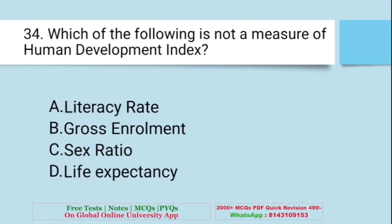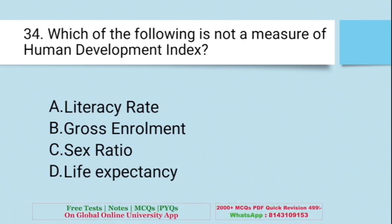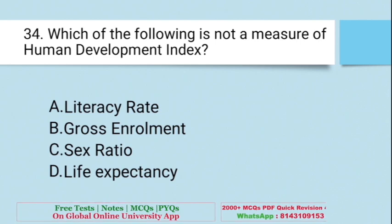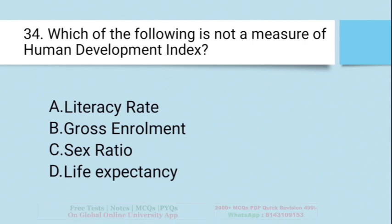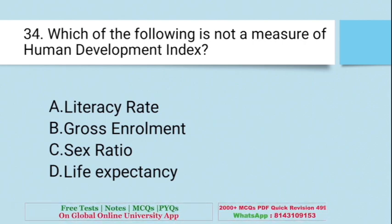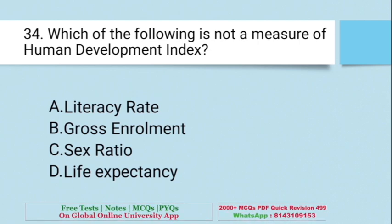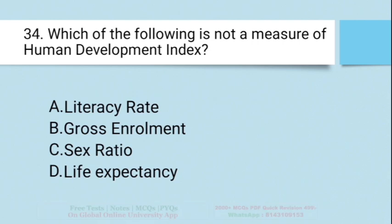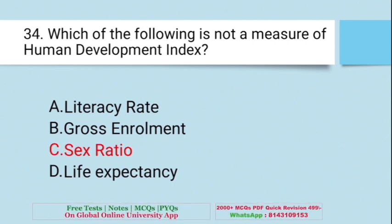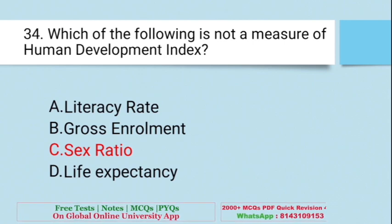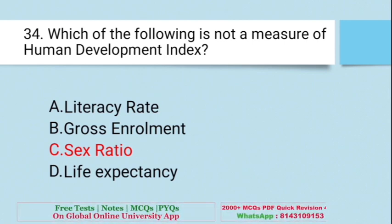Question: Which of the following is NOT a measure of the Human Development Index? A. Literacy Rate, B. Gross Enrollment Rate, C. Sex Ratio, D. Life Expectancy. The right answer is C — Sex Ratio. HDI includes Literacy Rate, Gross Enrollment Rate, and Life Expectancy, but not Sex Ratio.